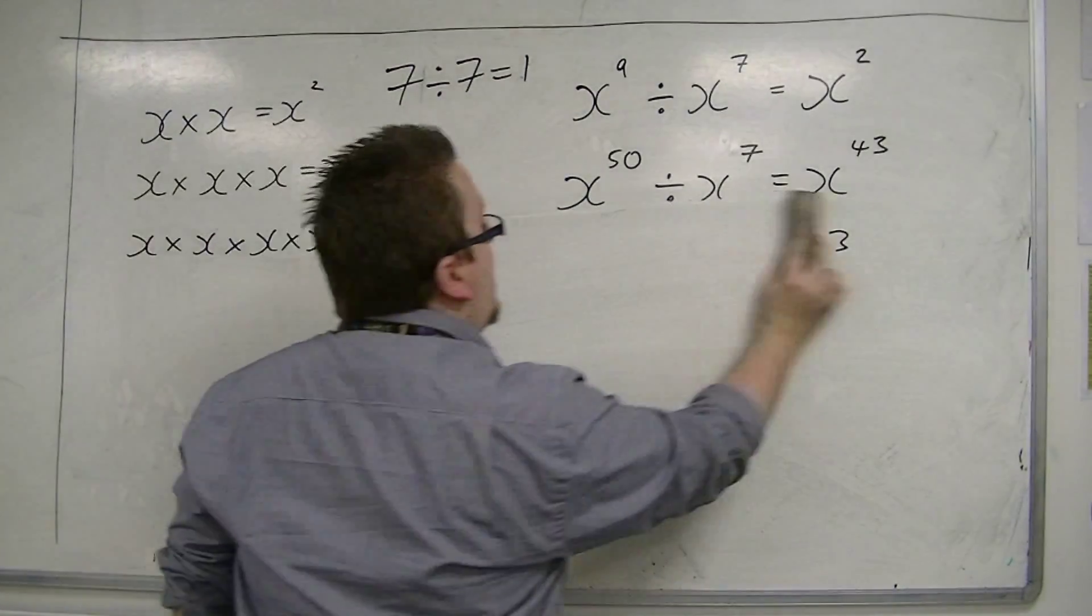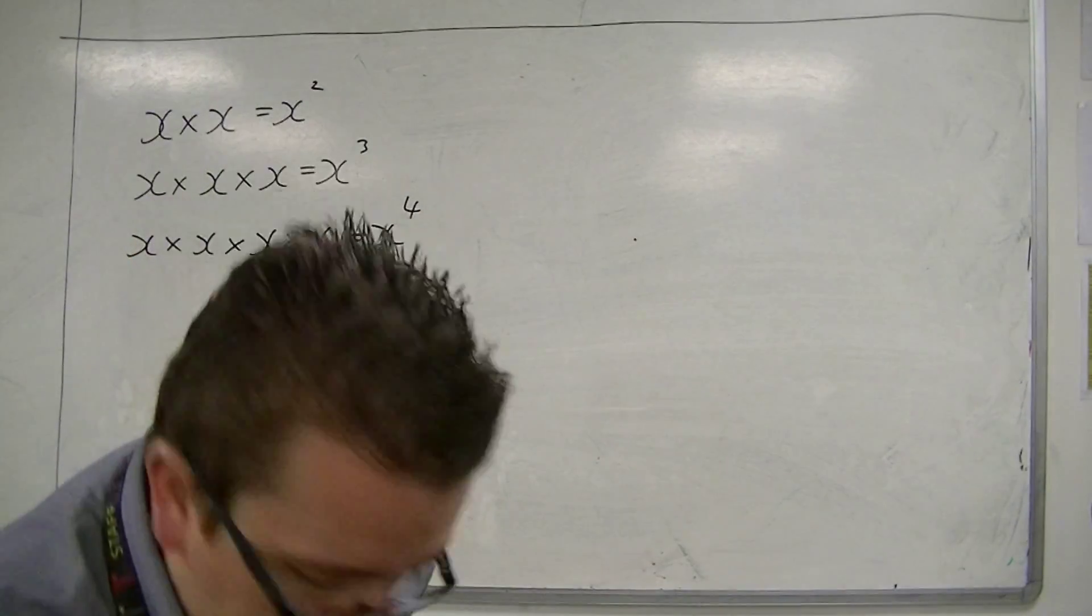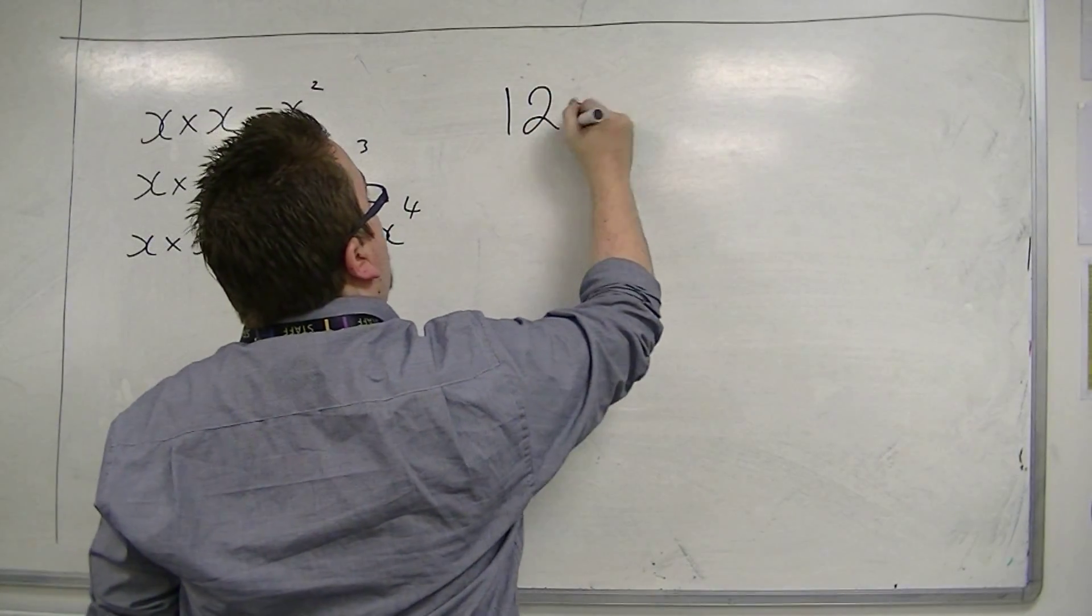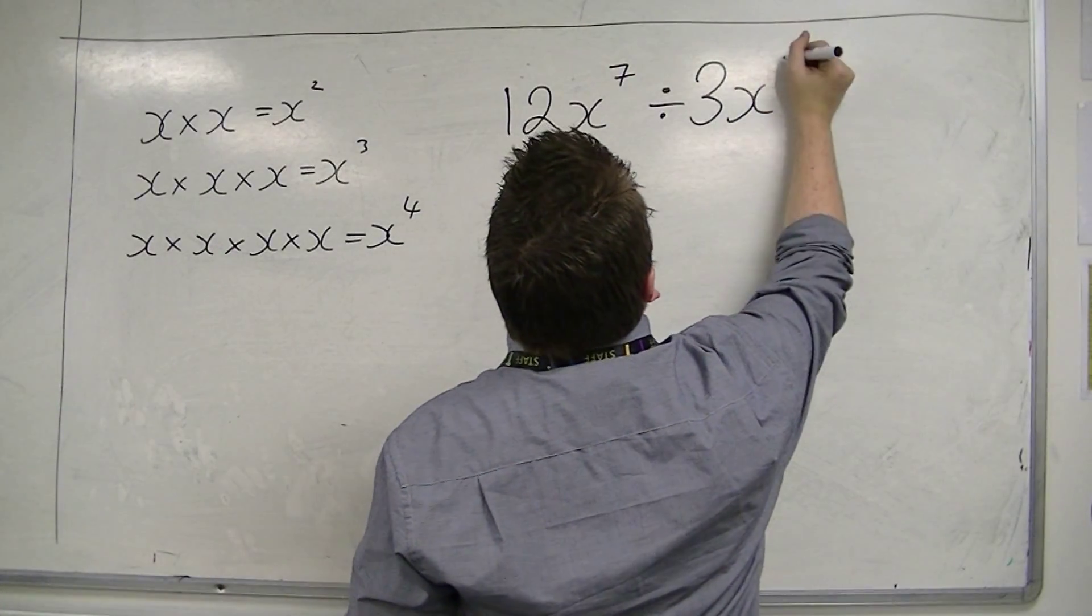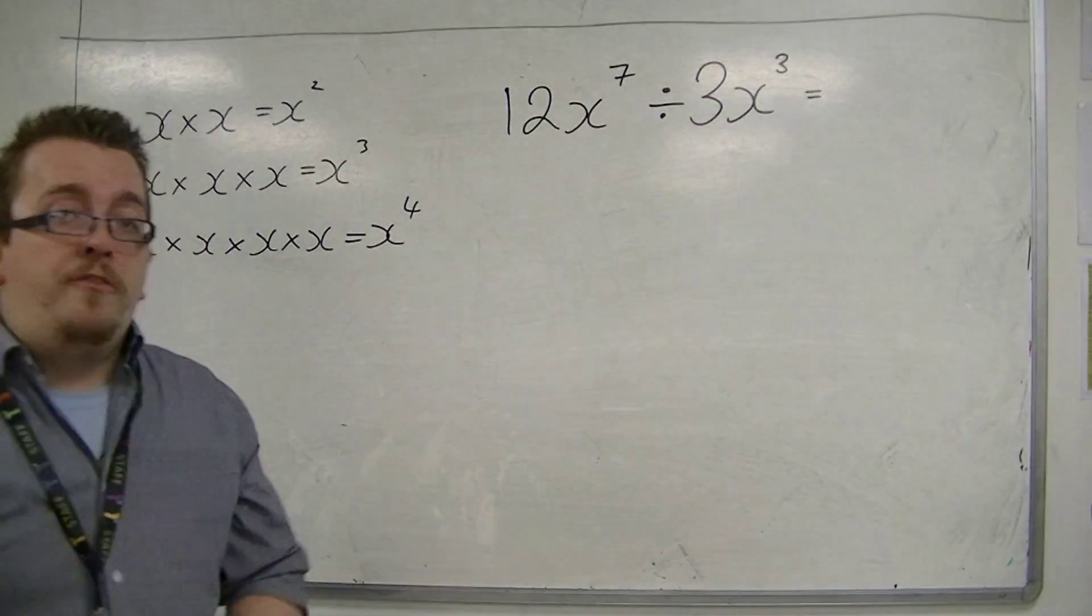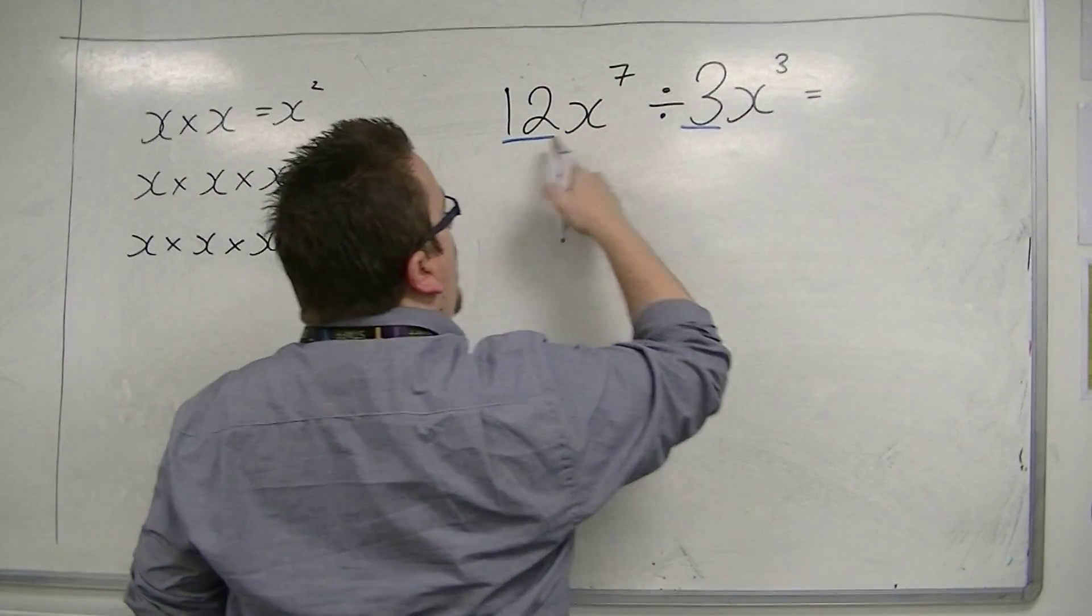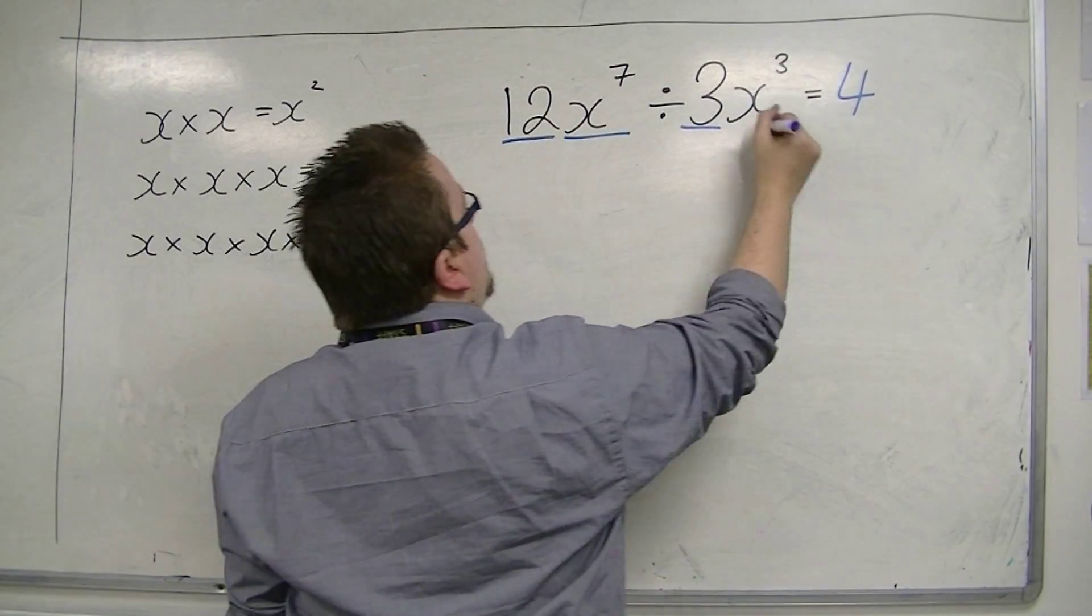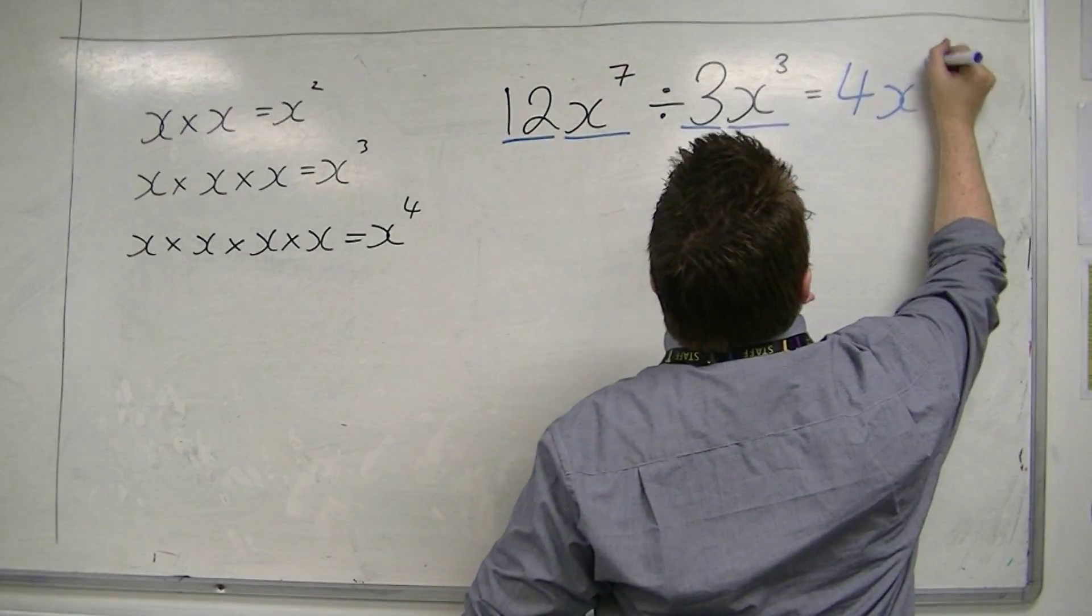So if we extend this one step further, and you have something like 12x to the 7 divided by 3x to the 3, then, as before, as with multiplying, work with the numbers first. 12 divided by 3 is 4. And then x to the 7 divided by x cubed would be x to the power of 4.